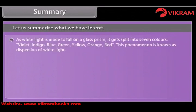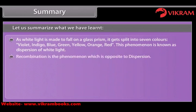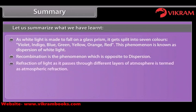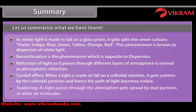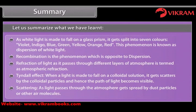As white light is made to fall on a glass prism, it gets split into seven colors: violet, indigo, blue, green, yellow, orange, red. This phenomenon is known as dispersion of white light. Recombination is the phenomenon which is opposite to dispersion. Refraction of light as it passes through different layers of the atmosphere is termed as atmospheric refraction. Tyndall effect — when light is made to fall on a colloidal solution, it gets scattered by the colloidal particles and hence the path of light becomes visible. Scattering — as light passes through the atmosphere, it gets spread by dust particles or other air molecules.